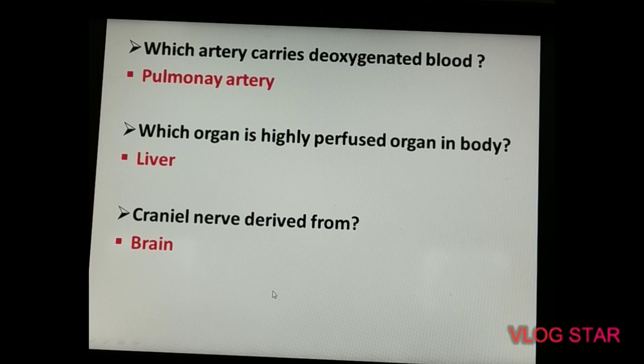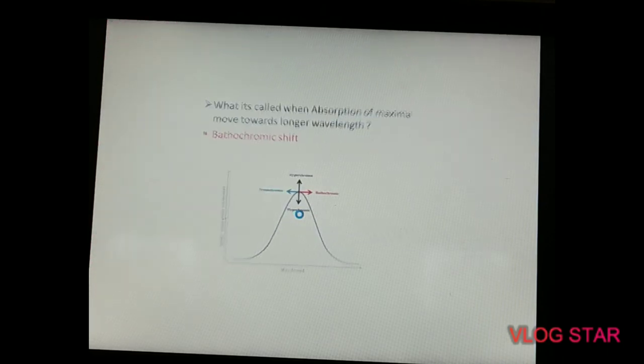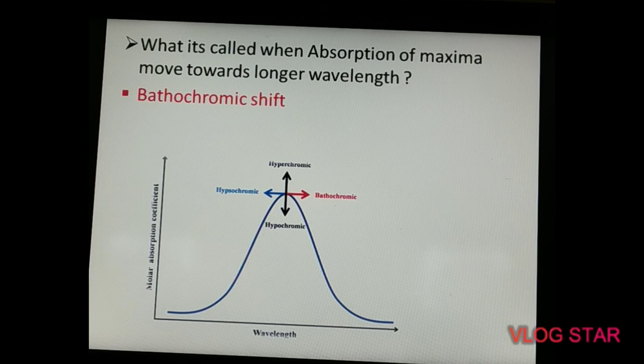Which organ is the most highly perfused organ in the body? The answer is the liver. Highly perfused organs — liver, heart, and kidney — contain a higher percentage of blood. The next question: cranial nerves are derived from the brain — this is a very simple question.